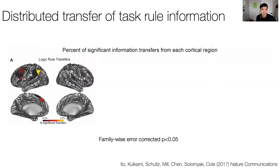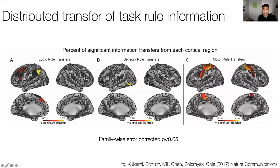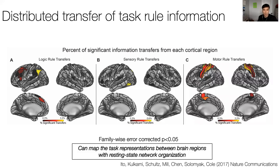The results show the percentage of successful transfers using activity patterns from colored regions projected onto all other brain areas. For logic rules, transfers are widespread; for sensory rules, transfers are sparser and come primarily from visual and dorsal attention areas; for motor rules, transfers are spatially localized to motor cortices. The main take-home is that we can map task representations between brain regions using network connectivity estimates from resting-state data.